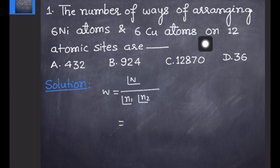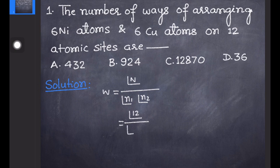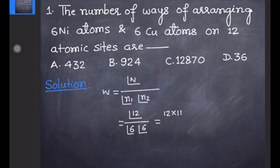The total number of available atomic sites is 12, so it will be factorial 12 divided by factorial 6 (nickel atoms) and factorial 6 (copper atoms). Now we can solve it: 12! becomes 12 × 11 × 10 × 9 × 8 × 7 × 6! divided by 6! × 6!